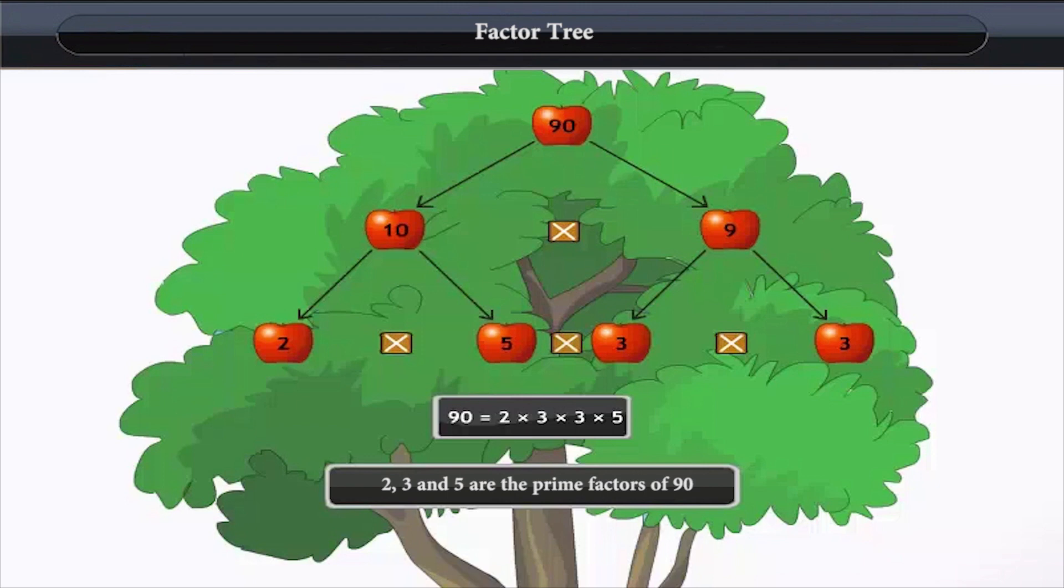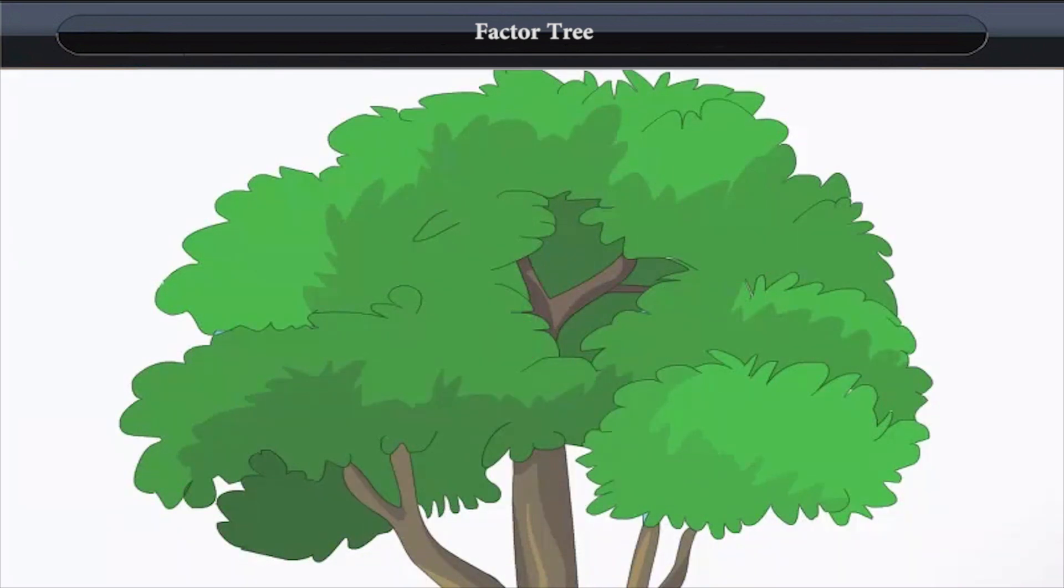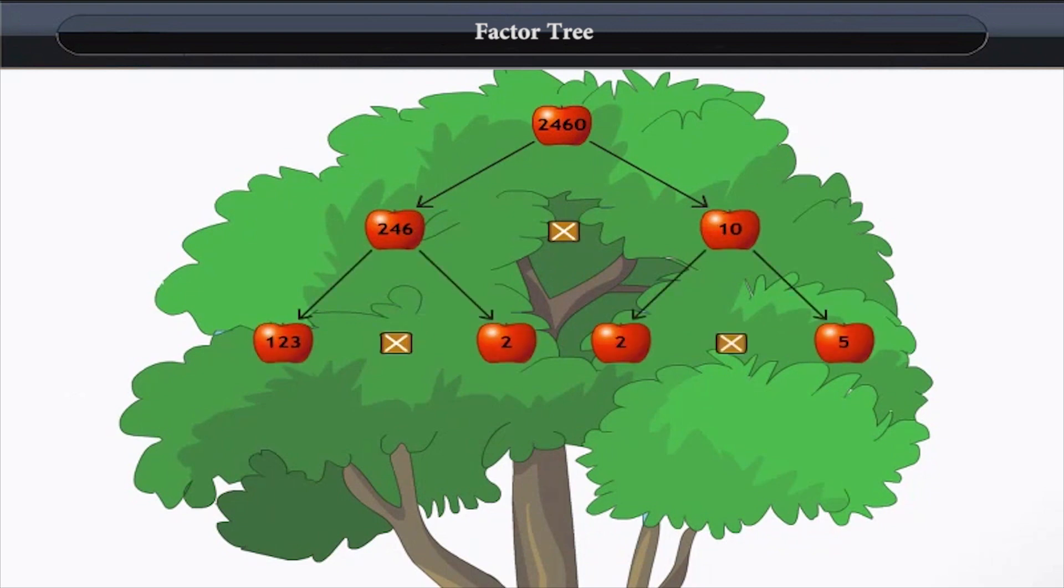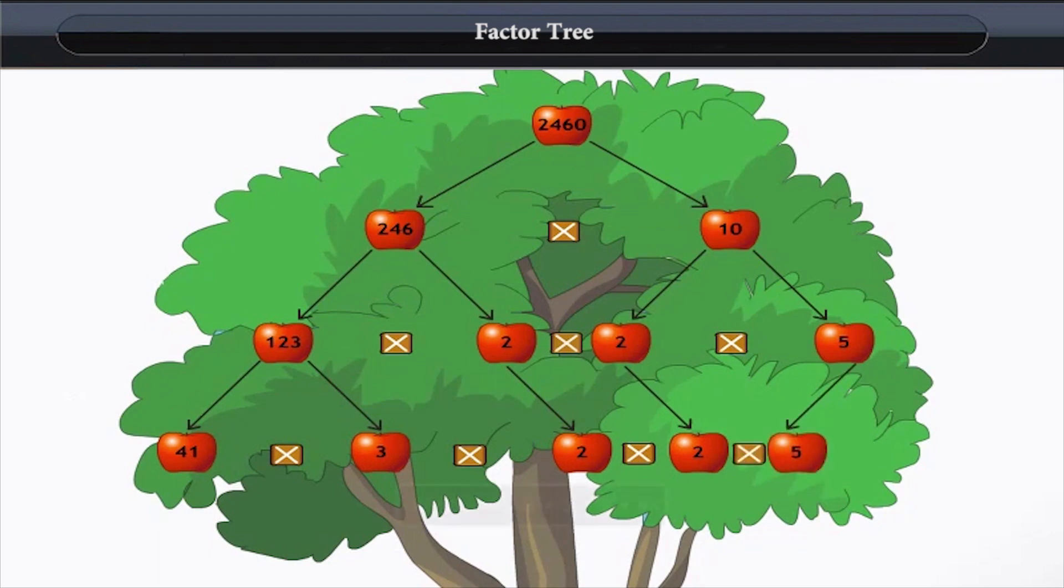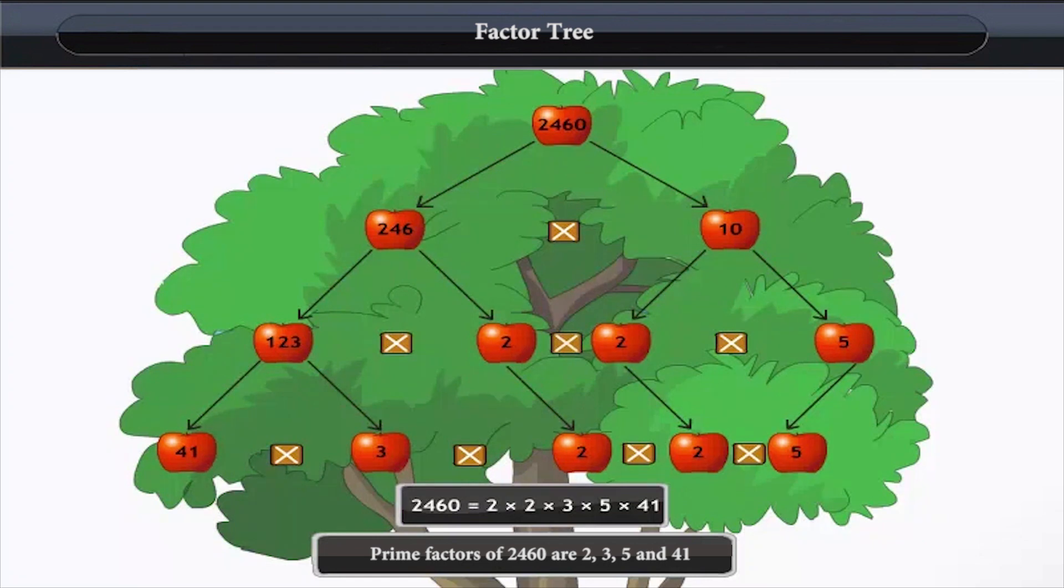Consider a number 2460. Now, we will obtain a factor tree of this number, just like we obtained for the number 90, by breaking the number into its factors. We obtain the prime factors of 2460 as 2 multiplied by 2 multiplied by 3 multiplied by 5 multiplied by 41.